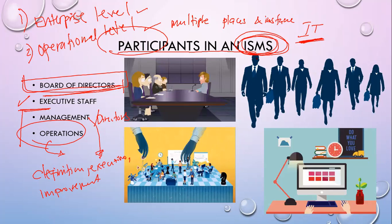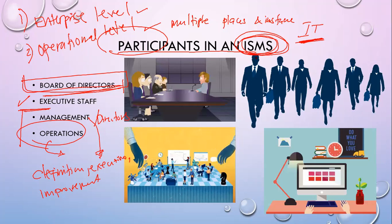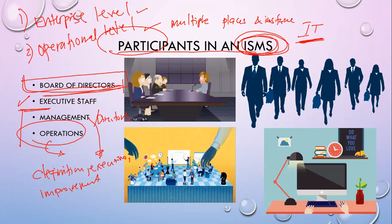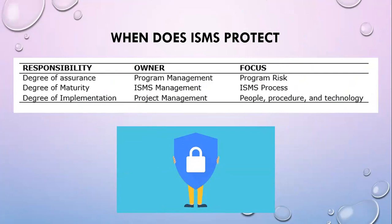A typical information security domain may be a data center, office area, or reception area. For example, if you're a hotel, you have your accounting area, front desk, reservations area, and the office of the executives. Now, when does ISMS protect? ISMS is actually protecting information by degree.